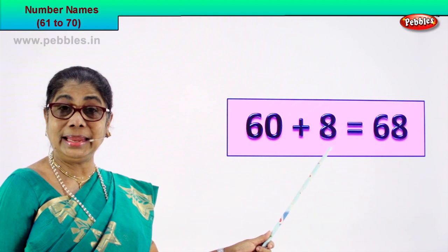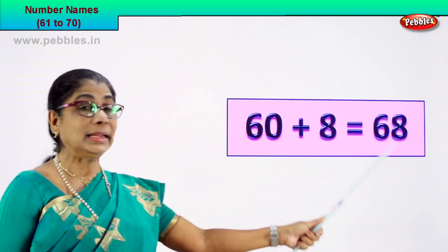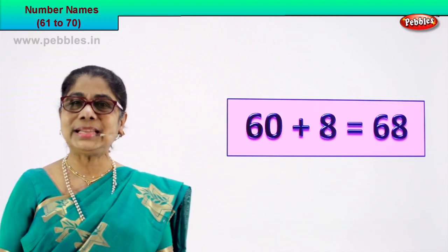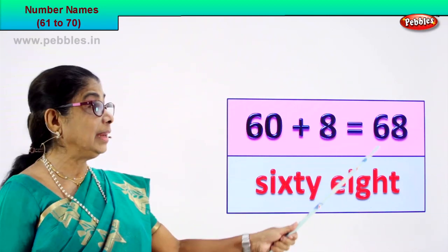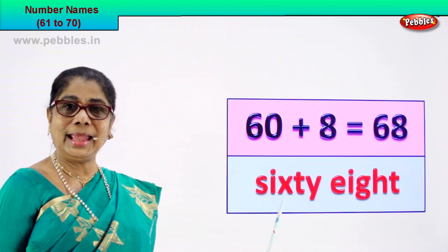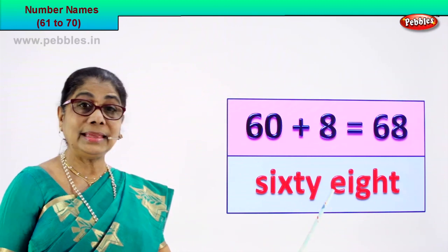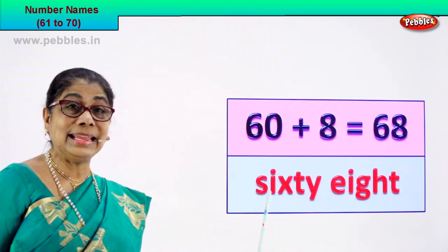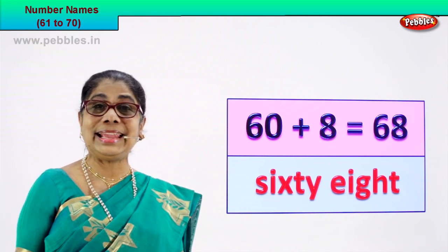Shall we go to our next number? 60 plus 8 is equal to 68. 6 and 8, 68. Yes! 68 is the numeral. We must write the name. Spell and write the name of this numeral. 60 you know and 8 you know. S-I-X-T-Y, and E-I-G-H-T. 68 — numeral and its name is sixty-eight.